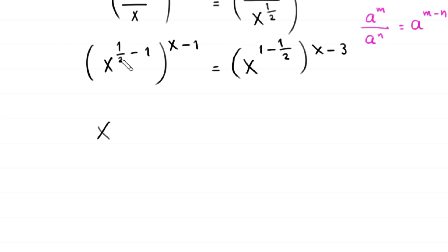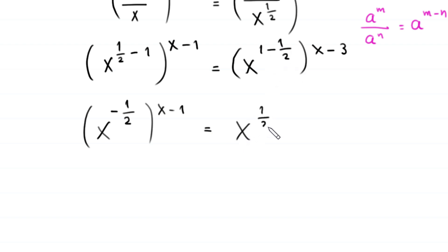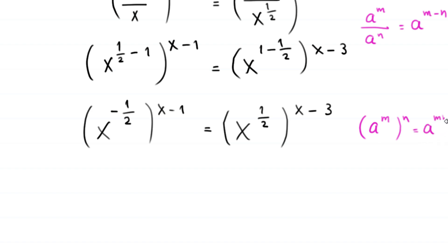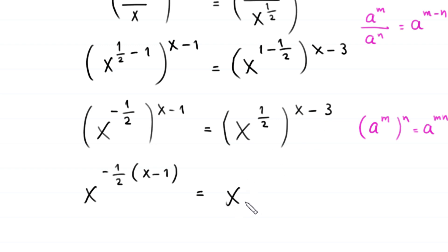By using the property of exponents — a to the power m divided by a to the power n equals a to the power m minus n — the left side becomes x to the power 1 over 2 minus 1, which is x to the power negative 1 over 2, whole to the power x minus 1. The right side becomes x to the power 1 minus 1 over 2, which is x to the power 1 over 2, whole to the power x minus 3.